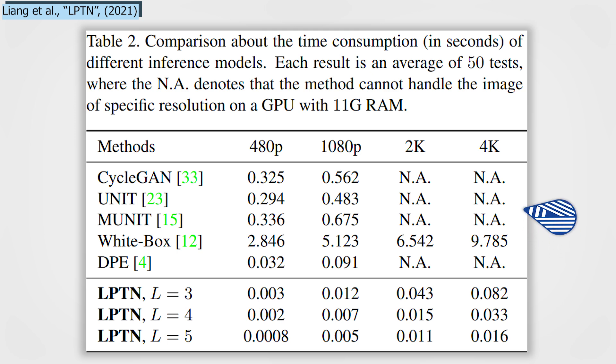And yes, this is in seconds. They could translate 4K images in not even a tenth of a second, using a single, regular GPU. It's also faster than all these approaches on 480p image translations. And yes, it's not 8 times faster, but 80 times faster on average. But how is that possible?